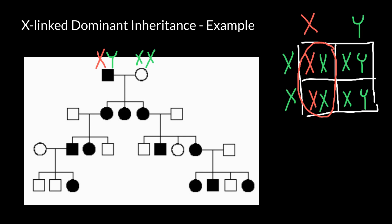100% of the daughters in this family would be affected because this is an X-linked dominant genetic disorder, and one defective X chromosome is enough to manifest it. All daughters would get this defective chromosome from their father. So all females here have this genetic disorder because they got the defective X chromosome from their father, and the other normal X chromosome comes from the mother's side.